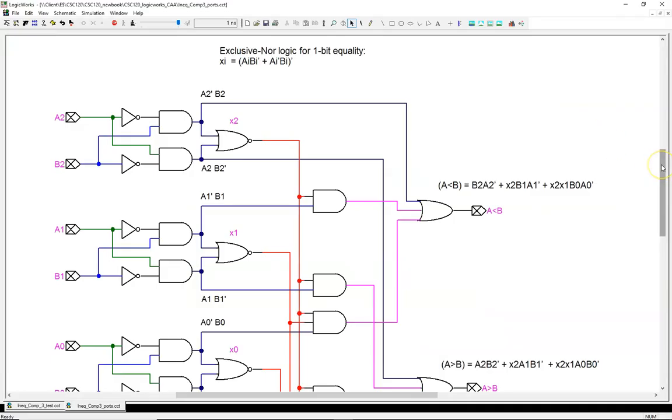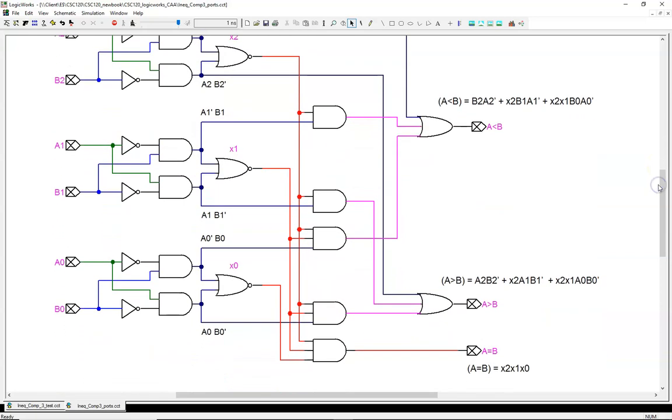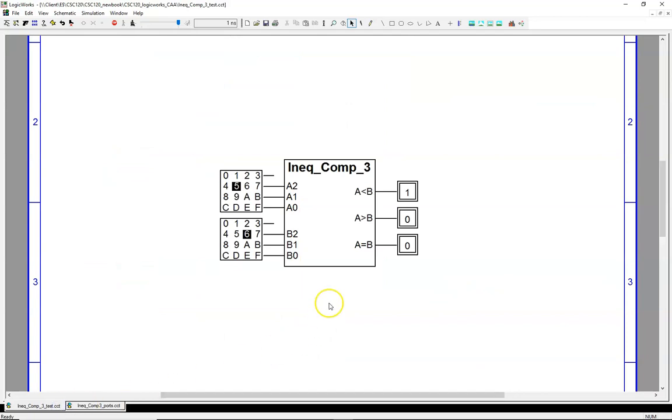The operation becomes clear when we look at the circuit in the simulator. Whoa, not this screen. This is the gate level circuit, which we'll build up to in this lesson. Let's look instead at the device test circuit, which lets us see the overall operation.